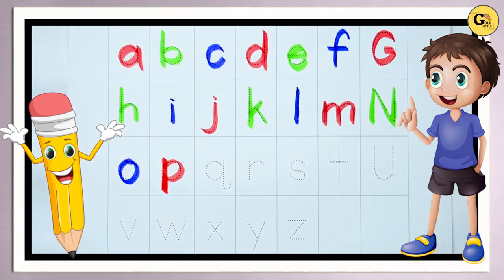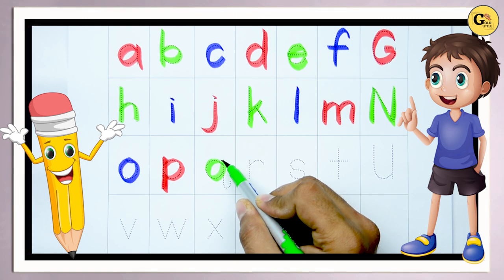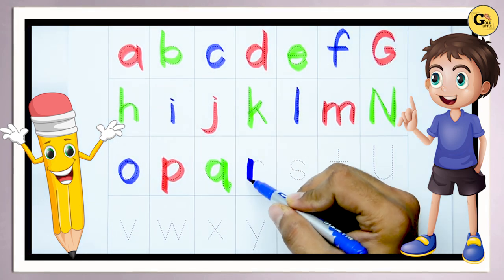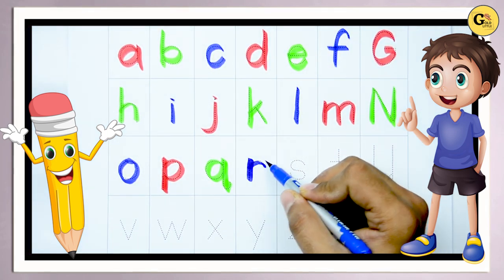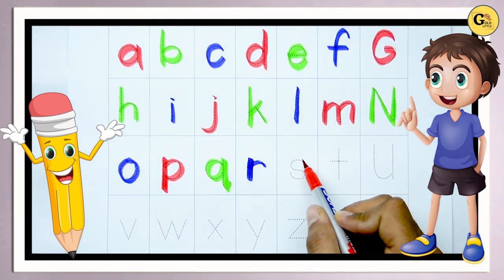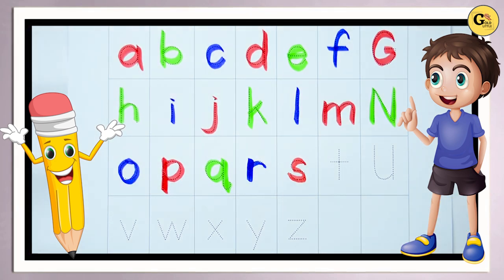Q, it's Q. Q for queen. R, R for rabbit. It's R. Now it's S, small s. S for sun.